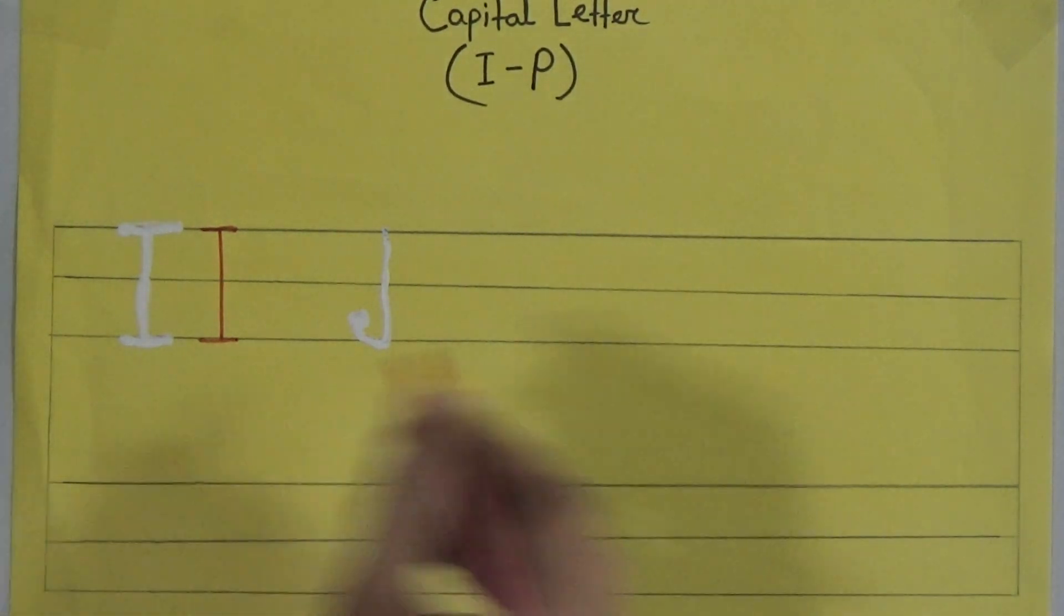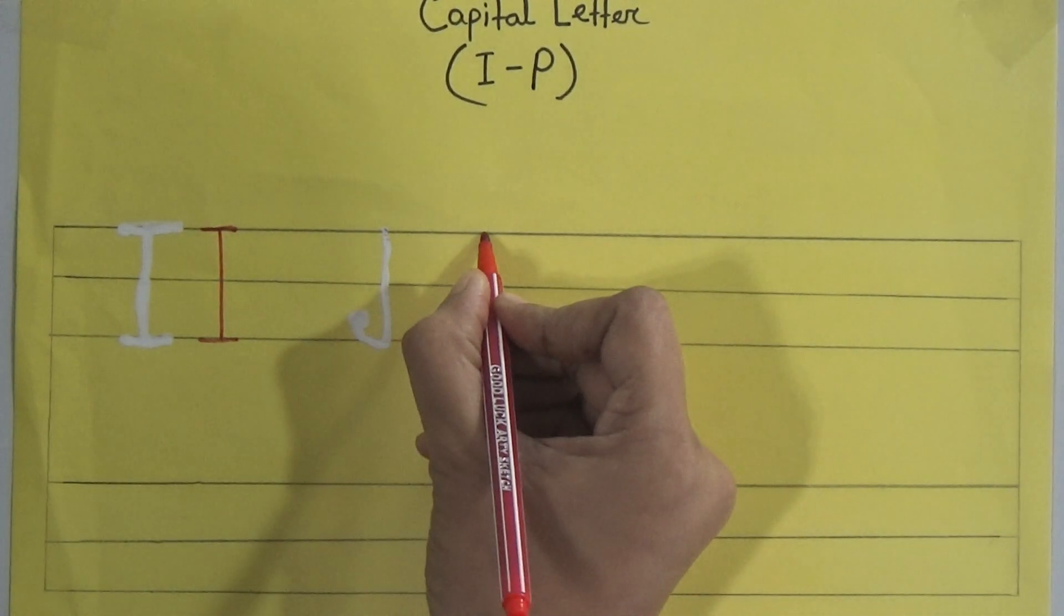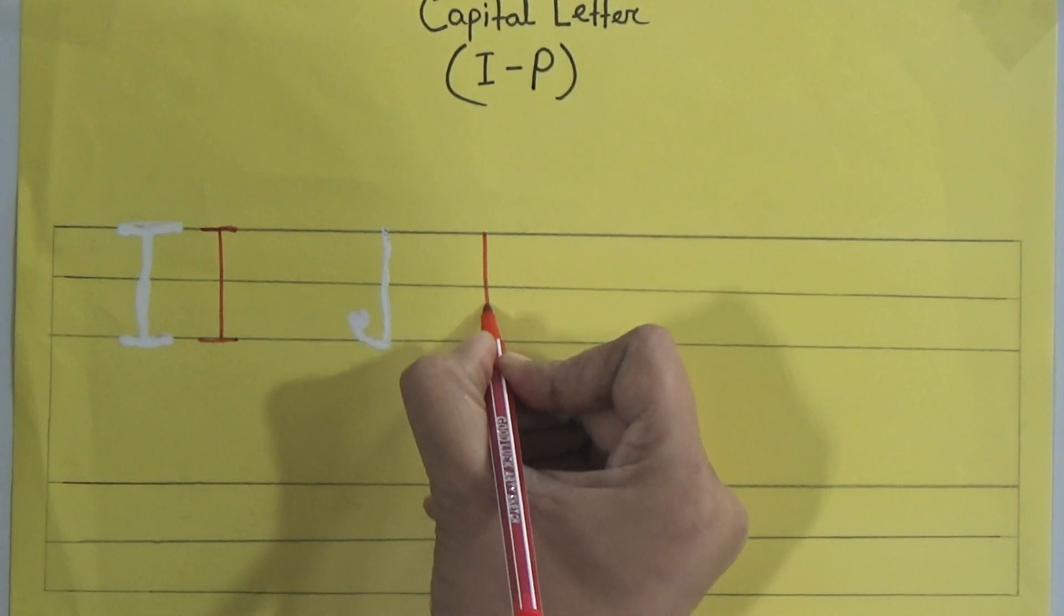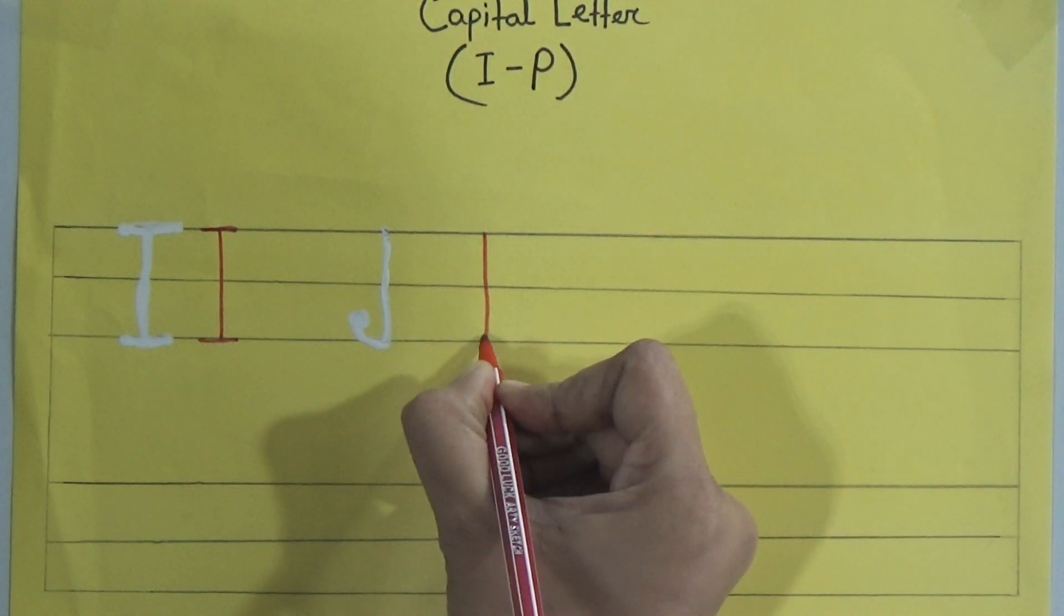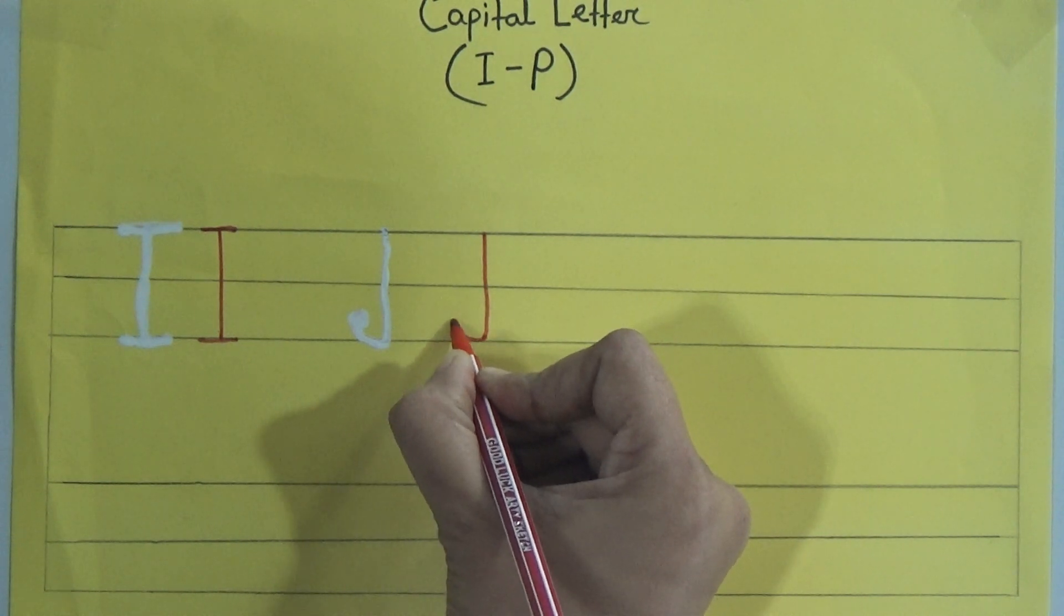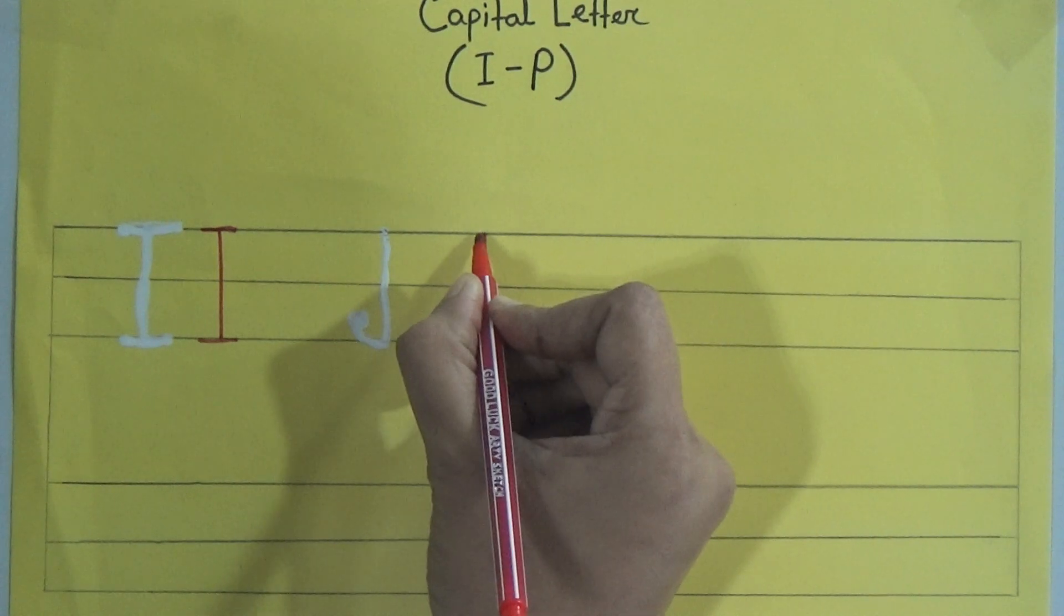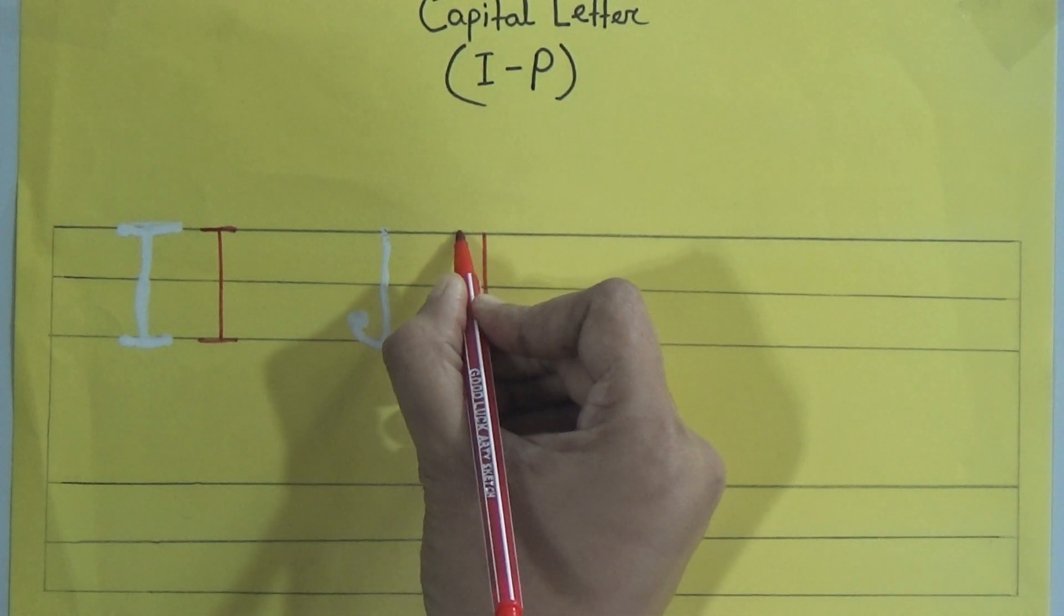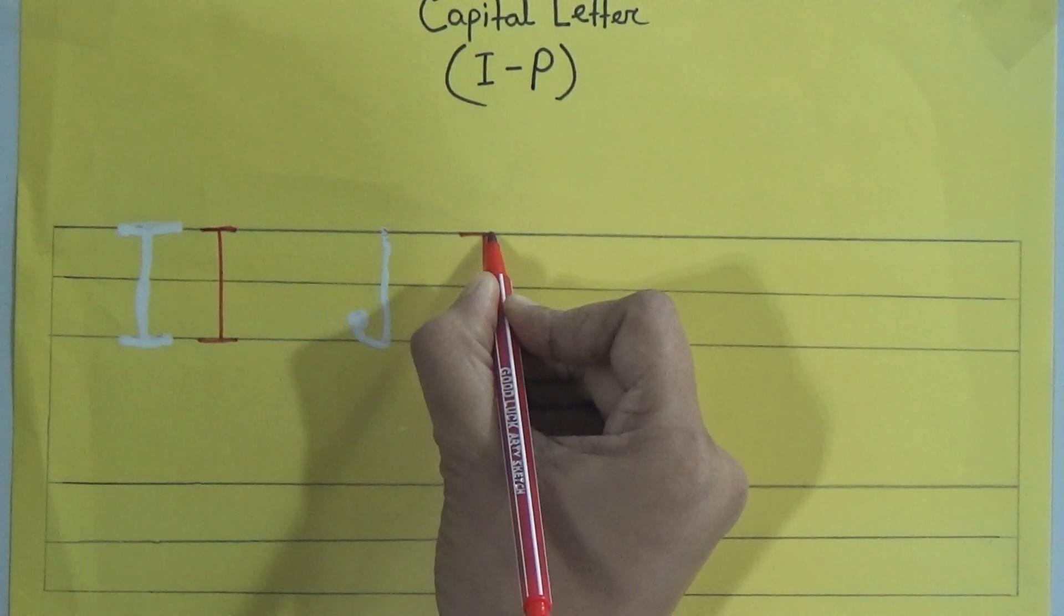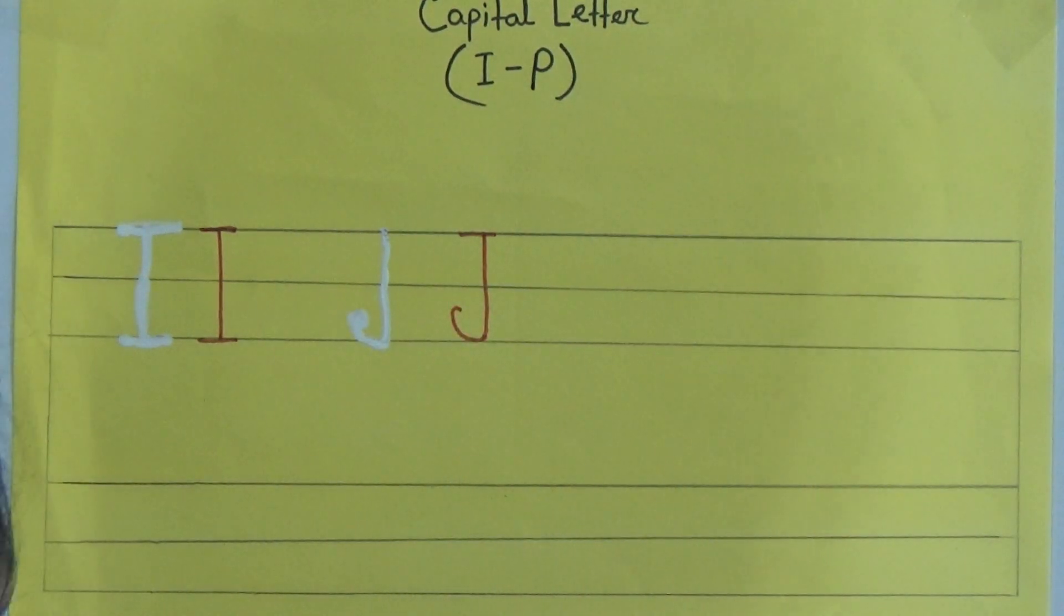Then we will start J. At first, one standing line, and with it, one backward curve. Then go to the top, then another slipping line here across. Okay.